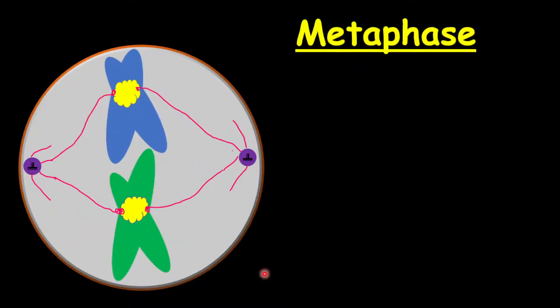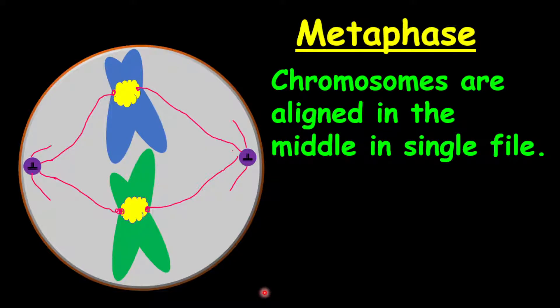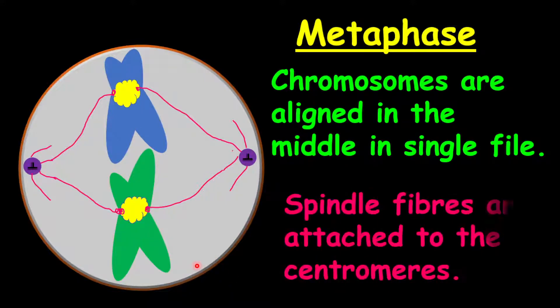The other phase is the metaphase. And in the metaphase, the chromosomes are aligned in the middle of the cell along the metaphase plate in single file. Also, what will happen here is that the spindle fibers will be attached to the centromeres, and they attach to the centromeres by a structure called kinetochores.